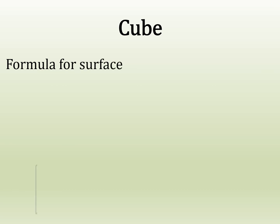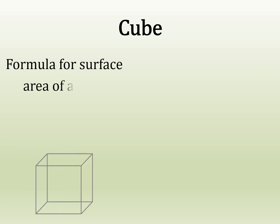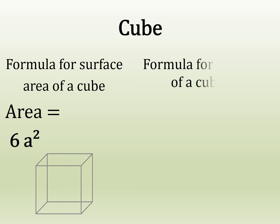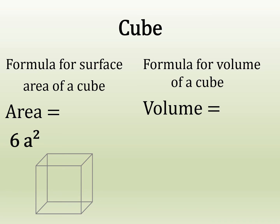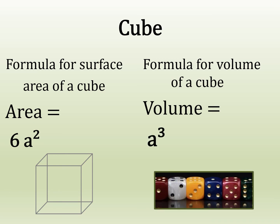To summarise: for a cube, the formula for surface area is six a squared, and the formula for volume is a cubed. Thank you.